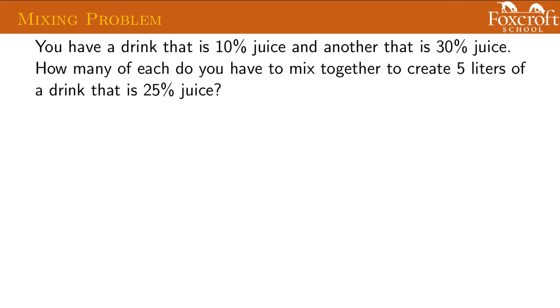The last type of problem we're going to look at is called a mixing problem. The skill check will kind of have two problems like we just did, and then one of these mixing problems. These mixing problems come because you're mixing two things together to create a third thing. So you have a drink that's 10% juice, another that's 30% juice. How many of each do you have to mix together to create five liters of 25% juice? These mixing problems are all going to be really similar. They look complicated because there's percentages and things, but the good news is there's kind of an outline for how to solve them.